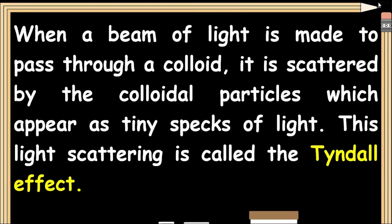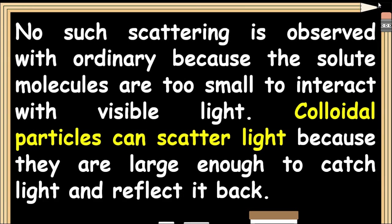When a beam of light is made to pass through a colloid, it is scattered by the colloidal particles, which appear as tiny specks of light. This light scattering is called the Tyndall effect. No such scattering is observed with ordinary solutions because the solute molecules are too small to interact with visible light. Colloidal particles can scatter light because they are large enough to catch light and reflect it back.